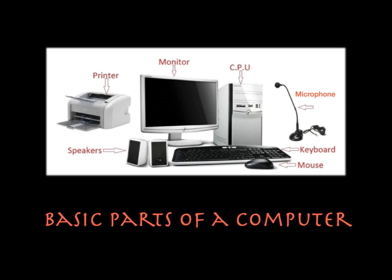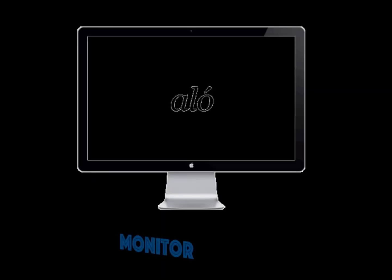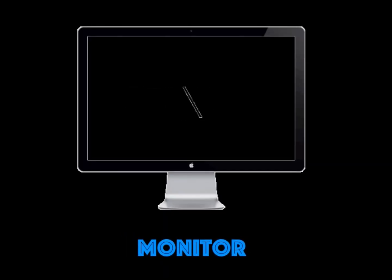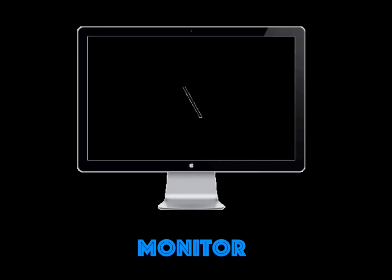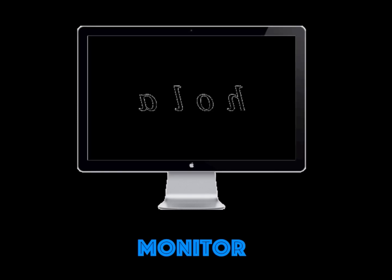So now let's learn about one of the main basic parts of the computer, that is the monitor. A monitor is a very important part of a computer. It is used to display text, pictures, and videos.